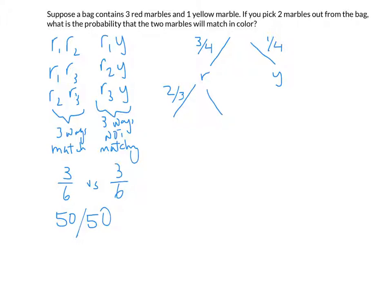If you drew a red on the first draw, then two-thirds of the time you'll get red again and one-third of the time you'll get yellow. Using the multiplication principle, the probability of going down this path is three-quarters times two-thirds, which equals two-fourths or one-half. That agrees with what we got from our list — half the time you get both reds.